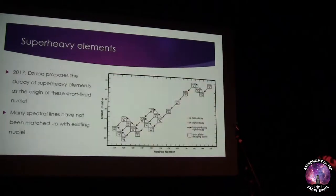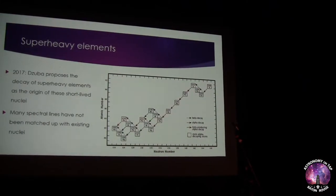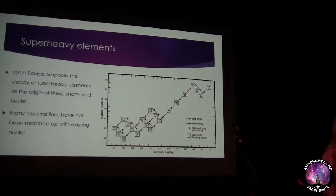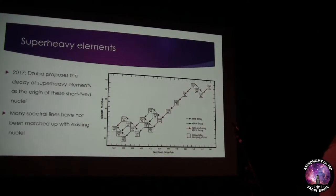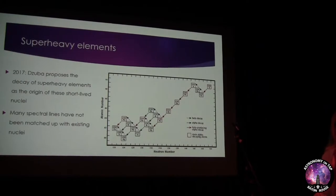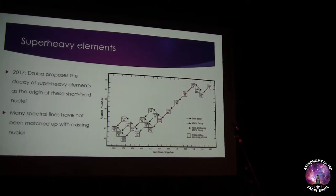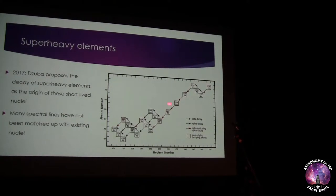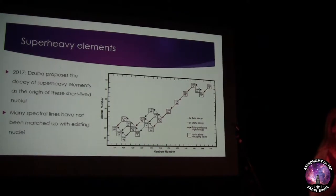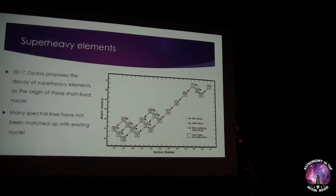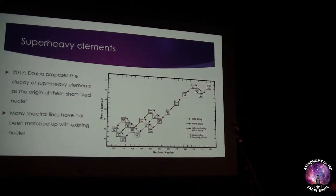The next interesting idea was proposed in 2017 by a Russian physicist named Tsuba. He proposed a decay of super heavy elements that would create these short-lived nuclei. Basically, you get a heavy element with a long half-life — on the order of a couple million years, something like uranium-238 — and it's constantly decaying, creating isotopes in a characteristic decay chain. The difference is that Tsuba proposed these super heavy elements are elements we haven't seen yet.